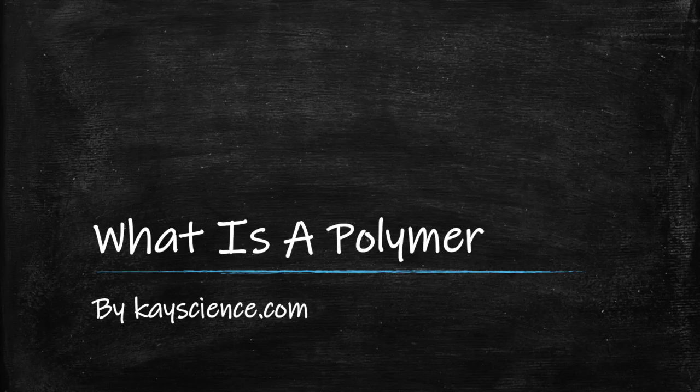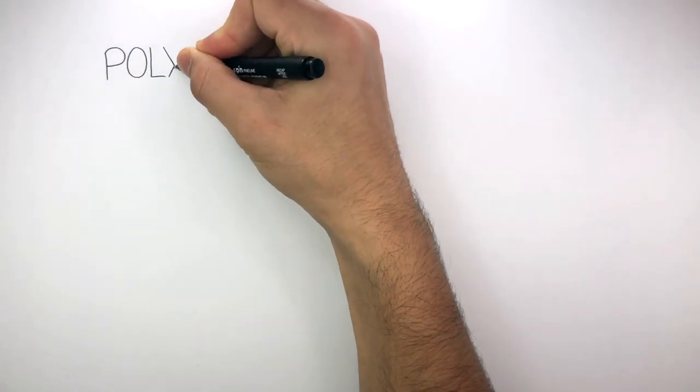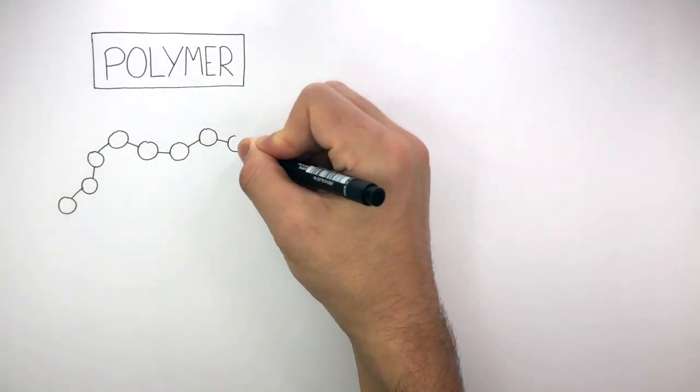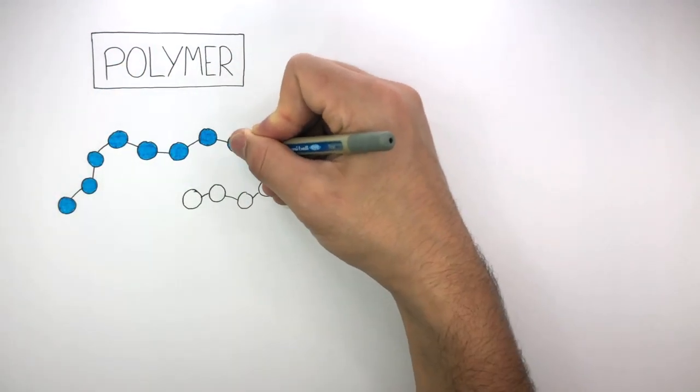What is a polymer? By kscience.com. A polymer is a large molecule made from lots of small monomers bonded together.